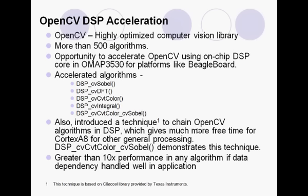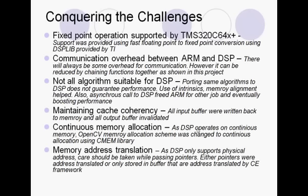Now let's take a look at the challenges I faced during this work and how I tackled them. First, the C64X Plus is a fixed point DSP, and to overcome this, fast floating to fixed point conversion was used via DSP libraries provided by Texas Instruments. Second, there was a loss of performance due to communication overhead between the Cortex and DSP, and this can be overcome by chaining algorithms on the DSP core. It was also found that porting algorithms to the DSP core does not always guarantee performance. To get the performance, intrinsics and memory alignment were quite helpful.